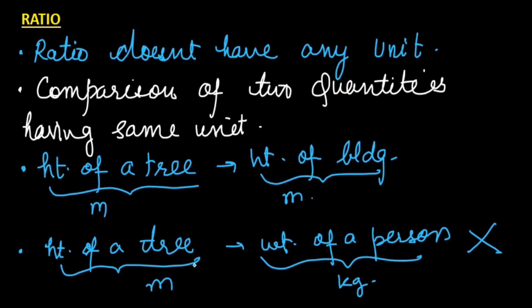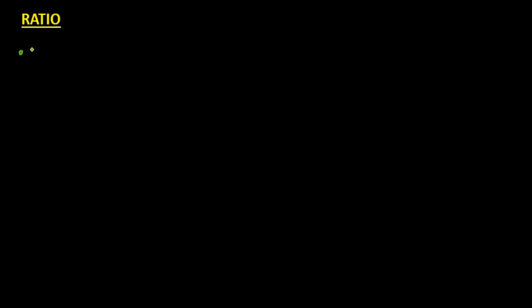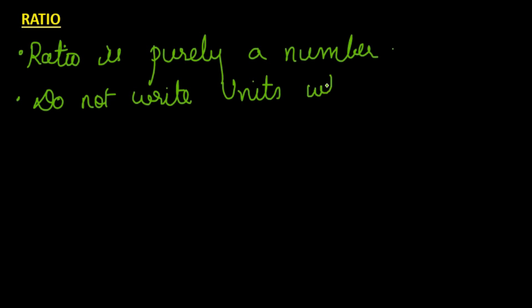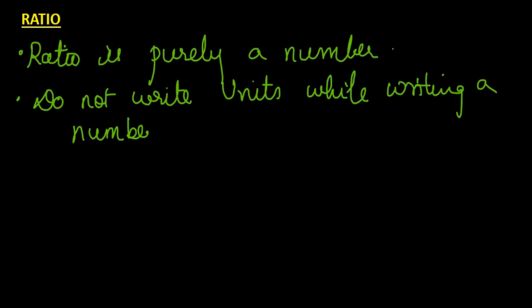Quantities in different units cannot be compared using ratios. For ratios, we need to compare two quantities which have the same unit. Since we are comparing two quantities having the same units, the units cancel out, and ratio is purely a number. We do not write the units while writing the ratio.